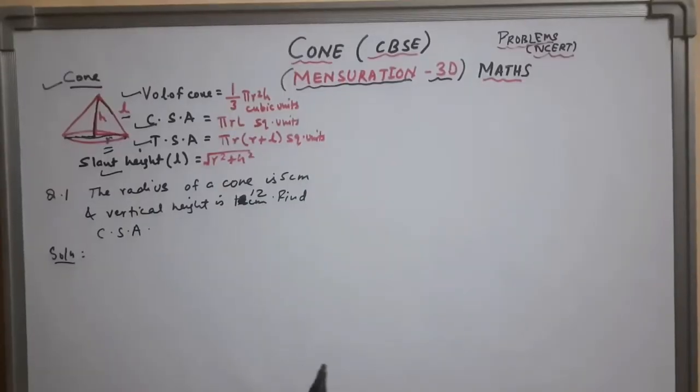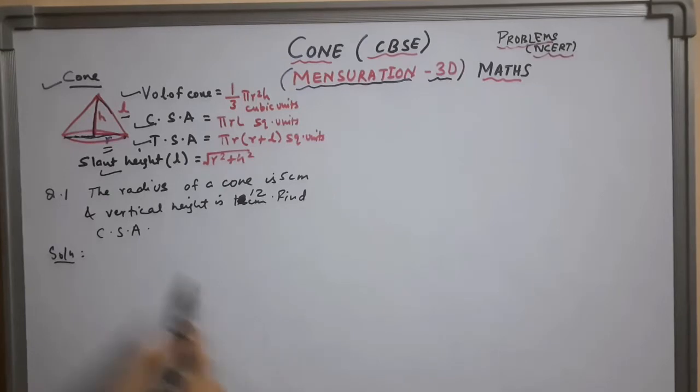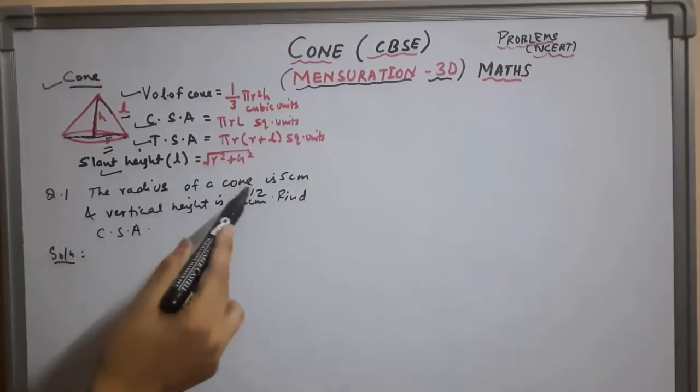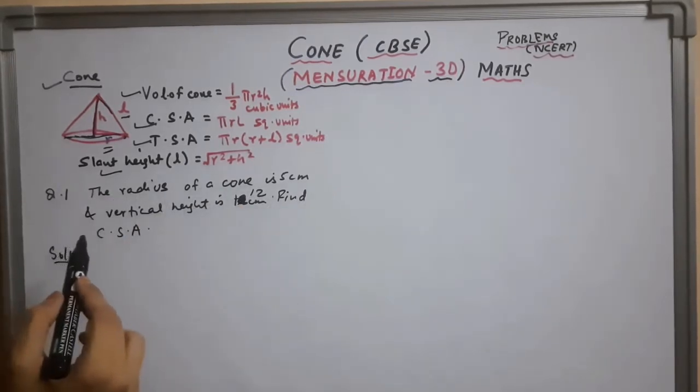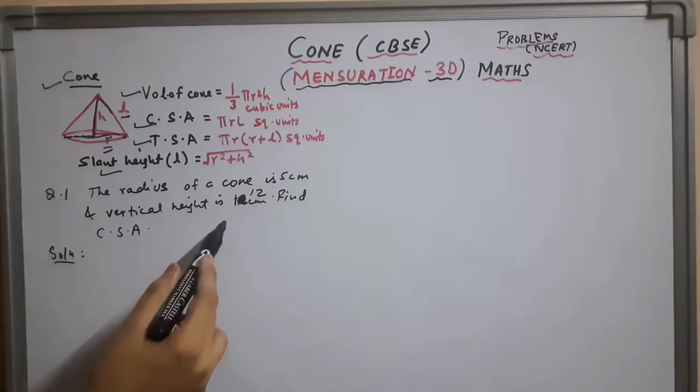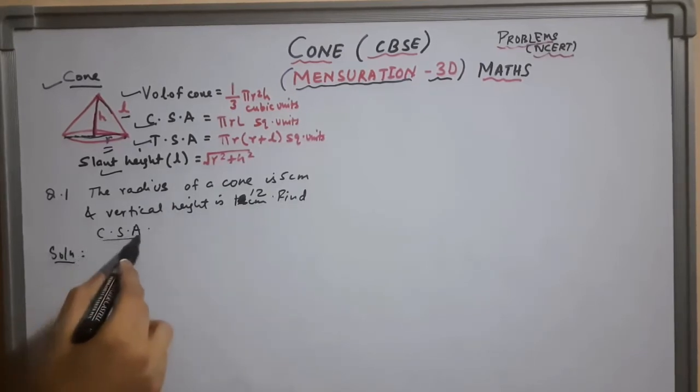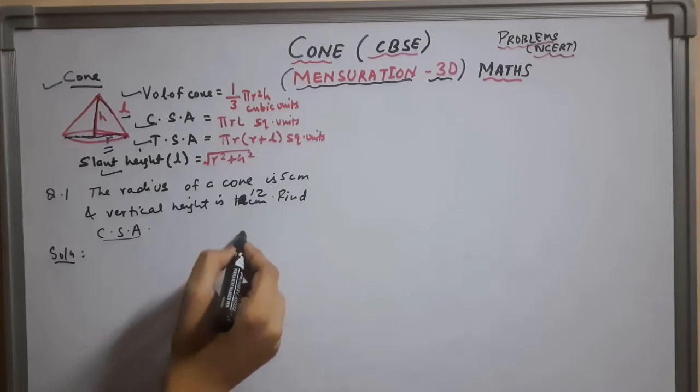Now I am going to discuss problems regarding cone. First question: the radius of the cone is 5 cm and the vertical height is 12 cm. We have to find the curve surface area. So have a look.